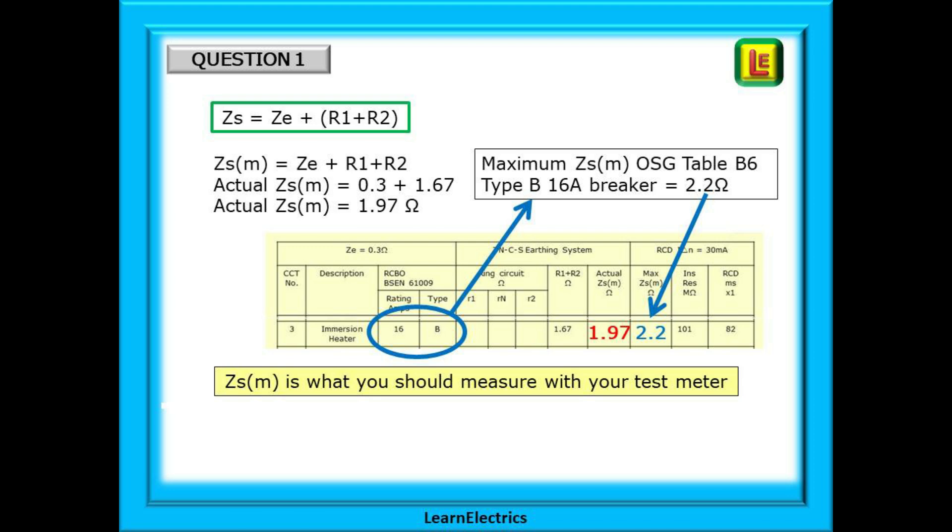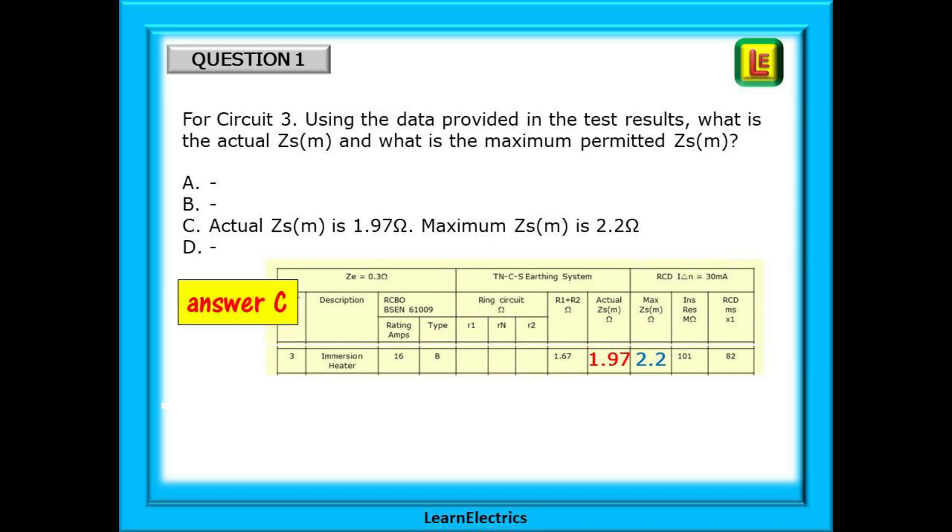Add the two together and we have ZS 1.97 ohms and that's the first half of this question. Now what is the maximum ohms that this circuit can be? In a healthy circuit the actual should be less than the maximum permitted value. We will find the maximum measured ZS in table B6 of the on-site guide. Find B type breakers, find 16 amps and where the row and column cross is the answer 2.2 ohms. Our answer then should be answer C. The actual is 1.97 ohms and maximum is 2.2 ohms. The actual is less than the maximum and this part of the testing is satisfactory.